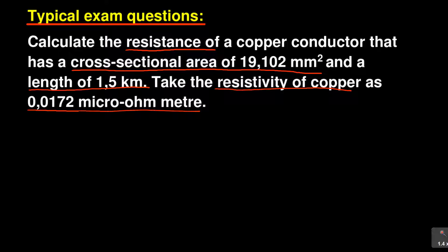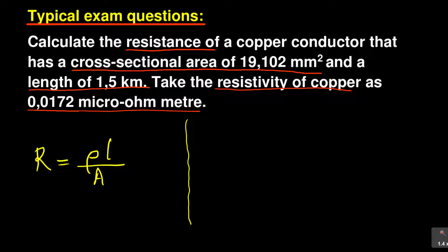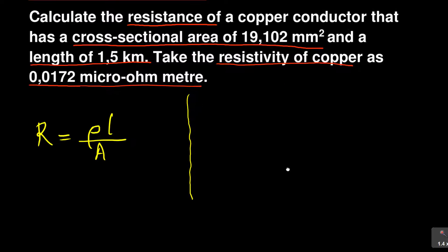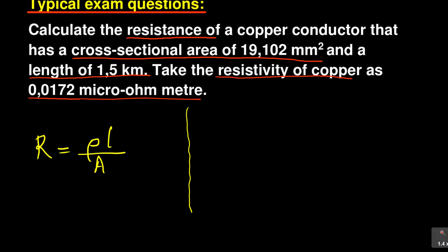It looks as simple as it is, but you need to look at a few things to do the right calculations. First, you need to write the correct formula. From the formulas, resistance equals rho times L divided by cross-sectional area A. But there are a few things to be careful about before you just apply the formula.